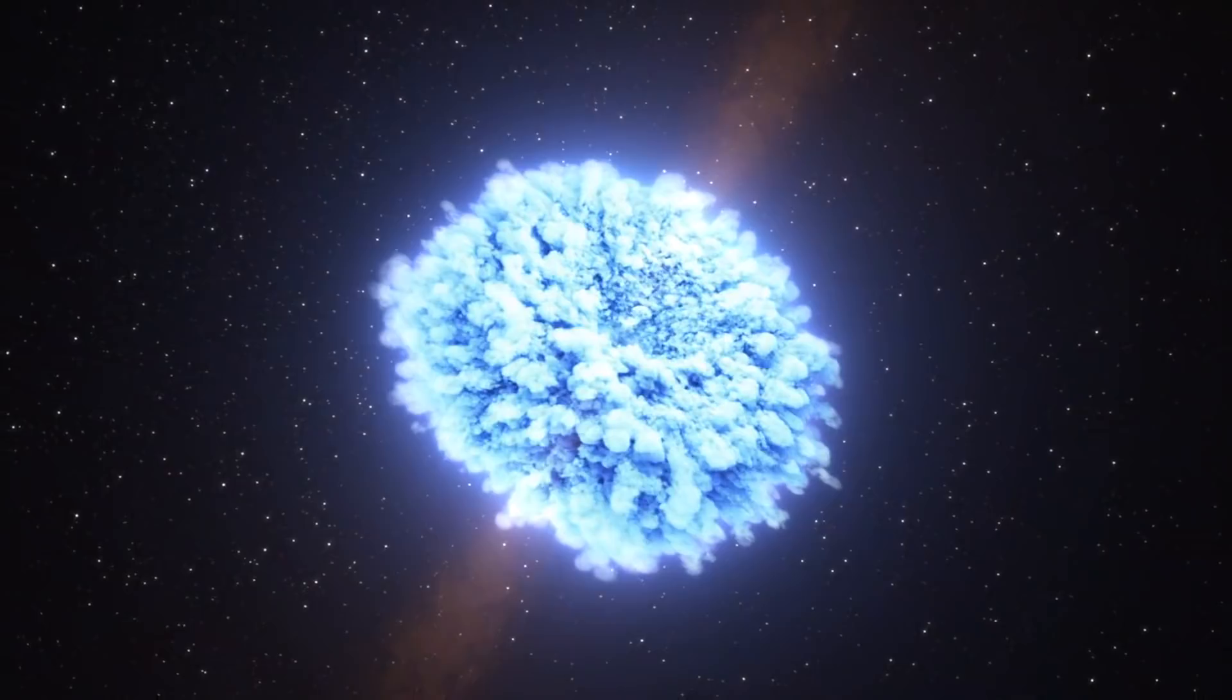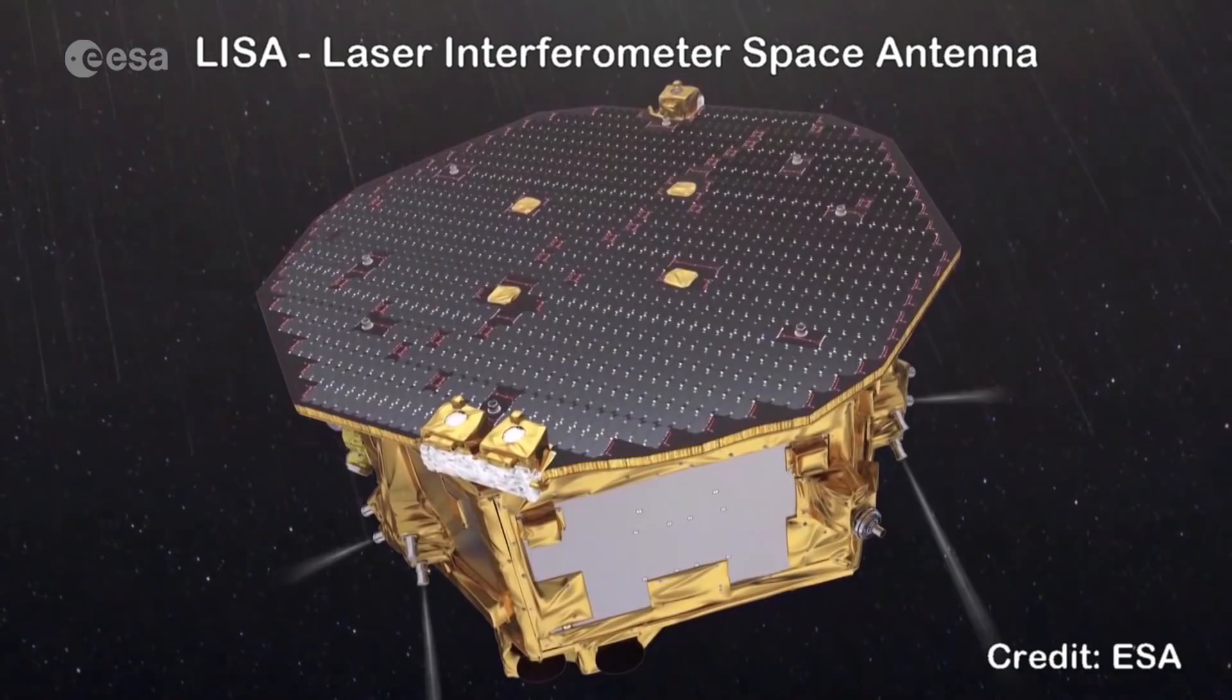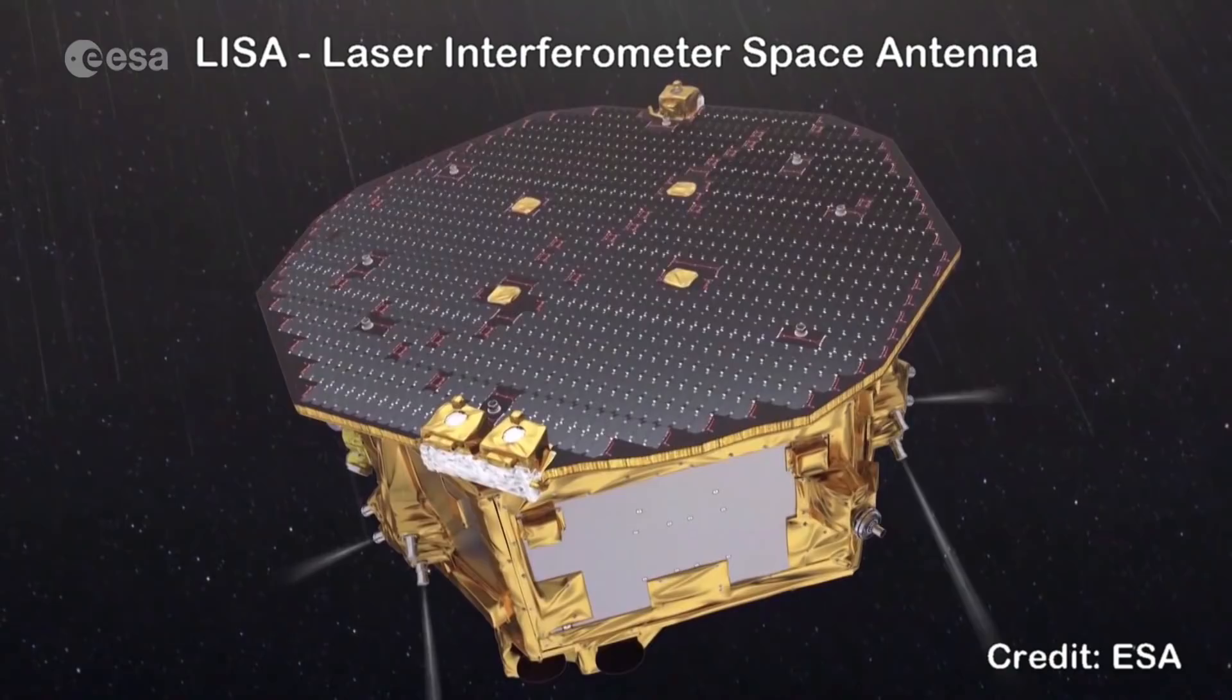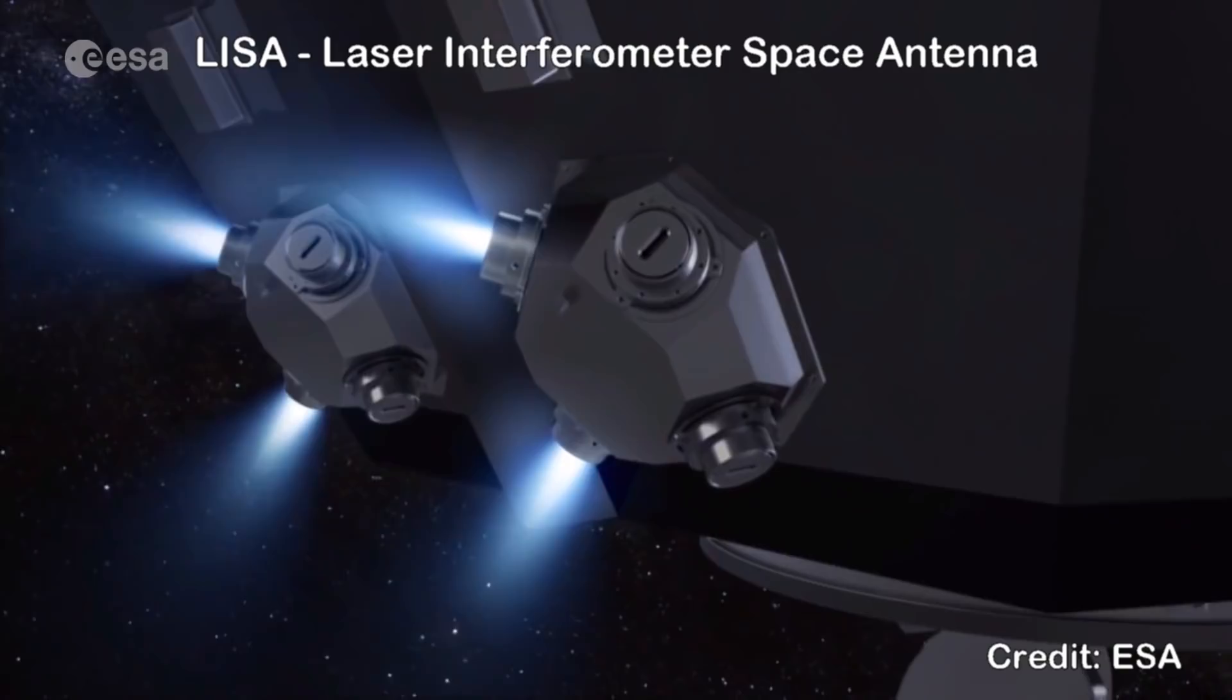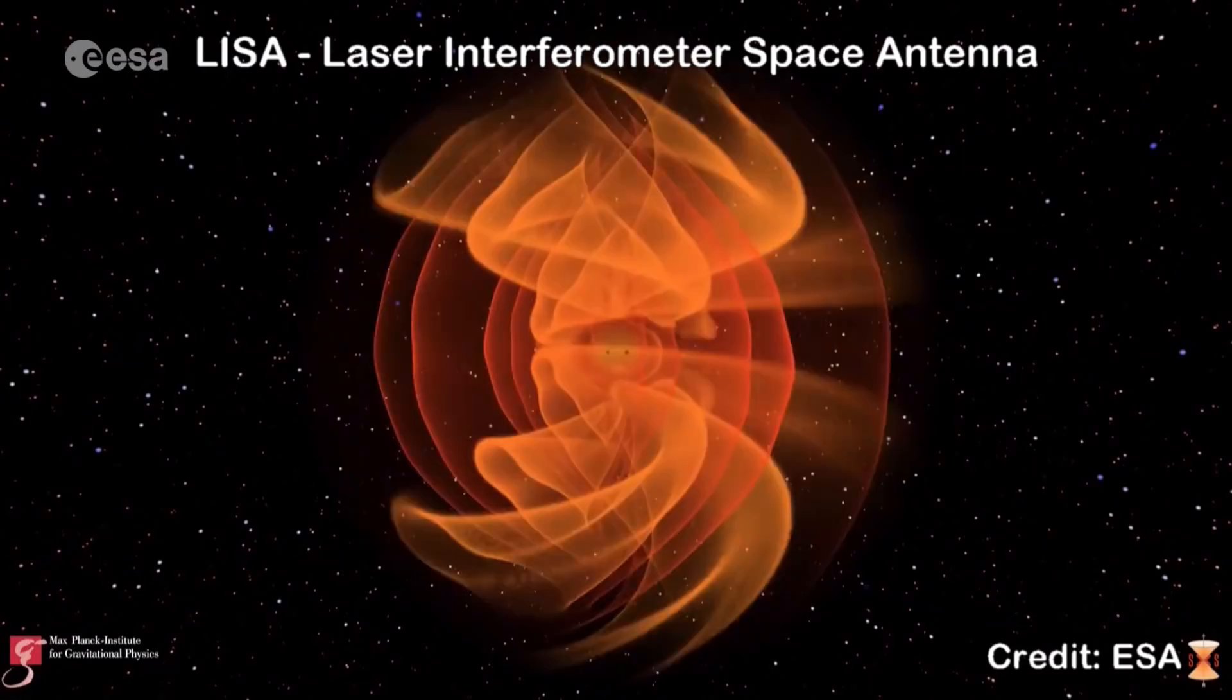I mentioned that each arm of the current LIGO observatory is 4 kilometers in length, but how about supersizing each arm to 2.5 million kilometers long? That's what they're proposing to launch in 2034 in a project called LISA, or Laser Interferometer Space Antenna, which should give us much better resolution.